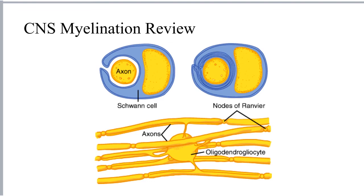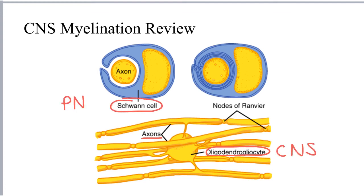Before discussing the pathophysiology of MS, it is helpful to review the purpose of myelination in general. Myelin is a tight protective layer surrounding axons in the central and peripheral nervous systems. Myelin is formed by a special type of cell called an oligodendrocyte. Oligodendrocytes are responsible for myelination in the CNS, and Schwann cells are responsible for myelination in the peripheral nervous system or PNS. These cells form tightly wrapped sheaths around axons that allow for some protection, as well as for more efficient conduction of an action potential along the axon.